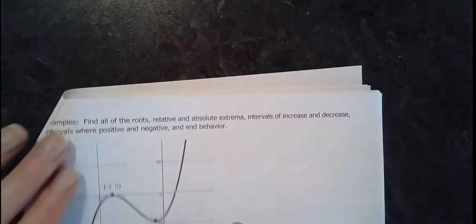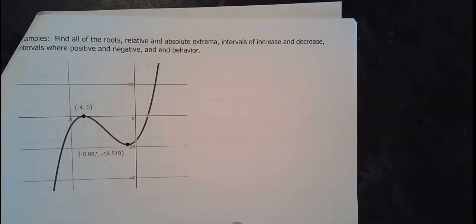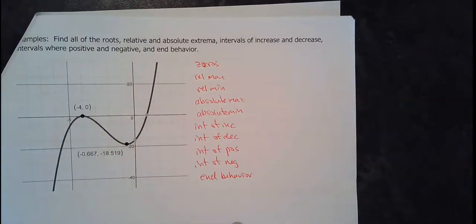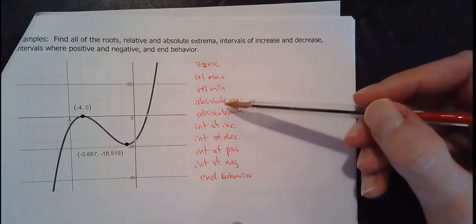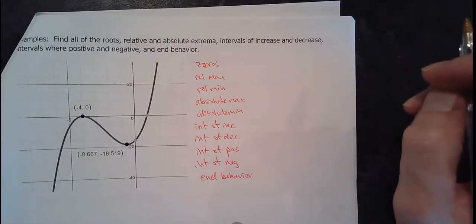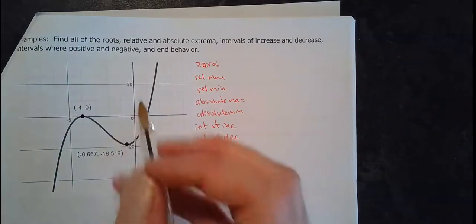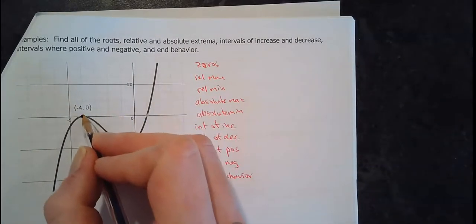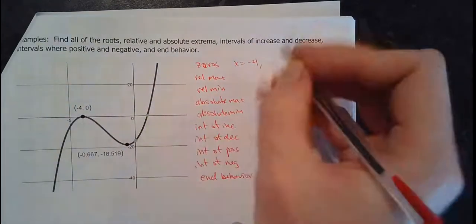On the back side of the notes, pause the video and write down: zeros, relative min, relative max, absolute max, absolute min, and so on — then we'll fill them out together. For the zeros on this graph, each mark is worth one. It looks like there's a zero at x equals negative 4, and another zero when x equals 1.